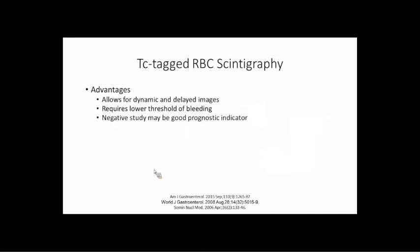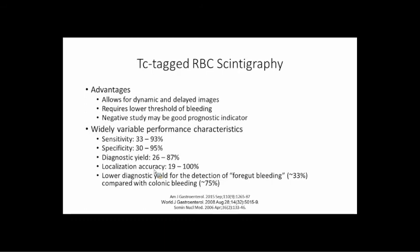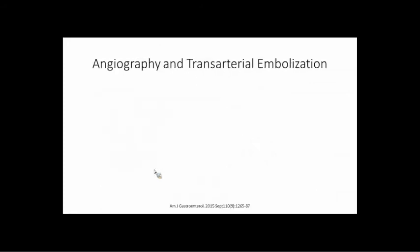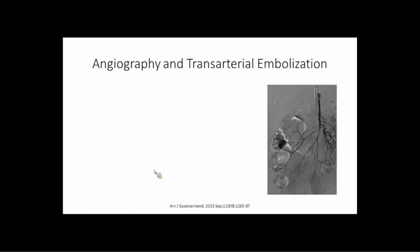Tagged RBC scans: we don't use them much. Radiolabeled colloid particles tag the erythrocytes, then you obtain dynamic images that can detect GI bleeding and sometimes help localize it. However, precise localization is really challenging because of peristalsis and superimposed small bowel loops — if you see extravasation in the right upper quadrant you don't know if that's small bowel, stomach, or colon. A negative study is actually a good prognostic indicator, and we've had cases where we've gotten a tagged scan to prove a patient isn't bleeding so we don't have to intervene. But overall, performance characteristics are variable and we rarely order them.